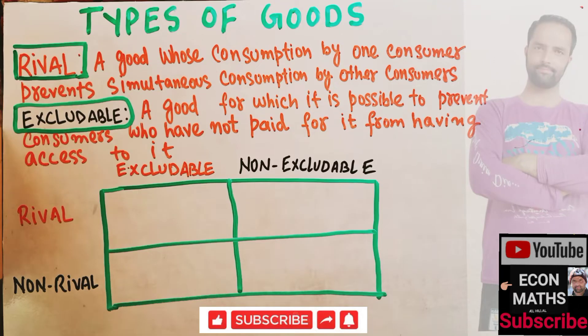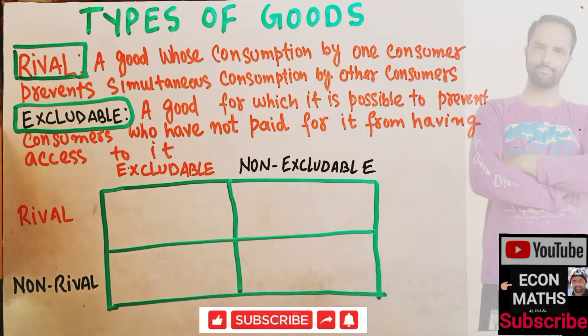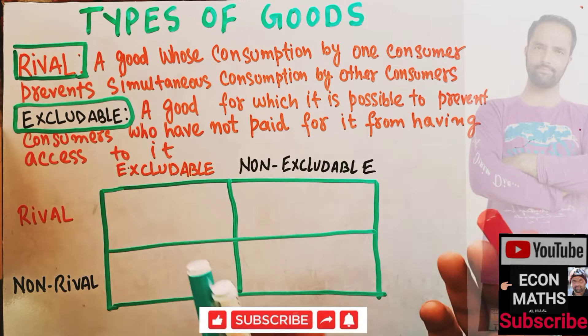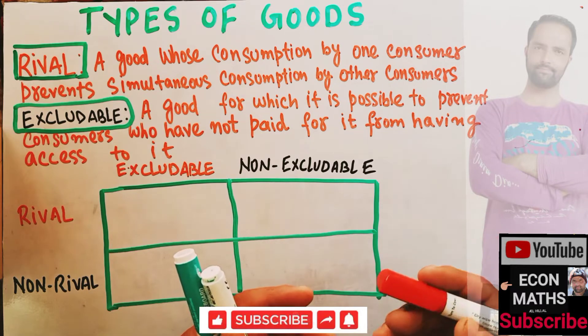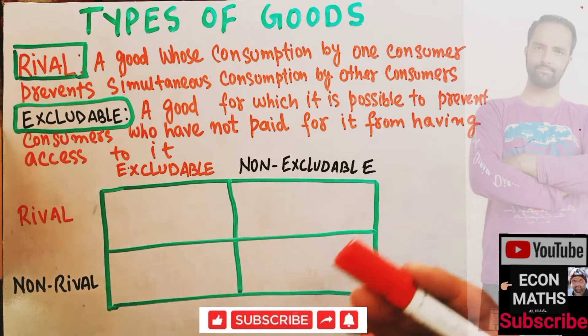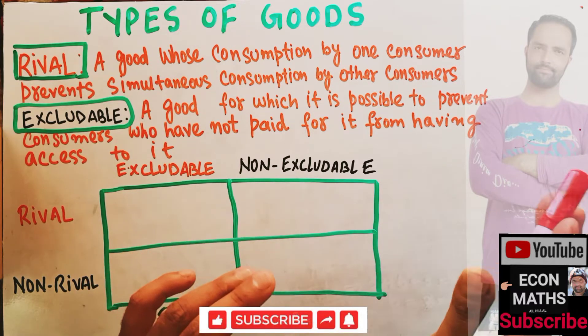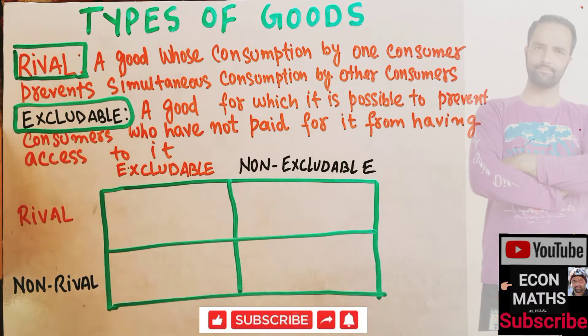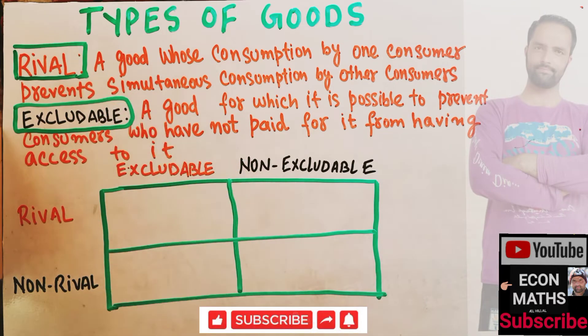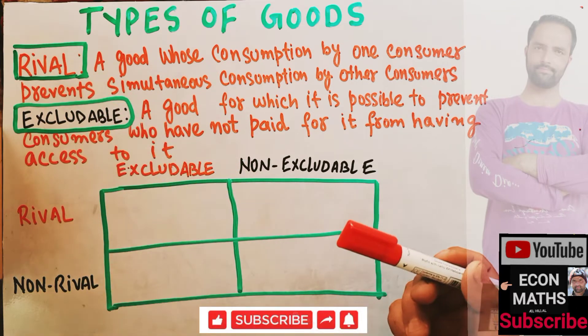In this video we will learn about the types of goods in economics on the basis of rivalness and excludability. We have four types of goods in economics based on whether they are rival or excludable or not.